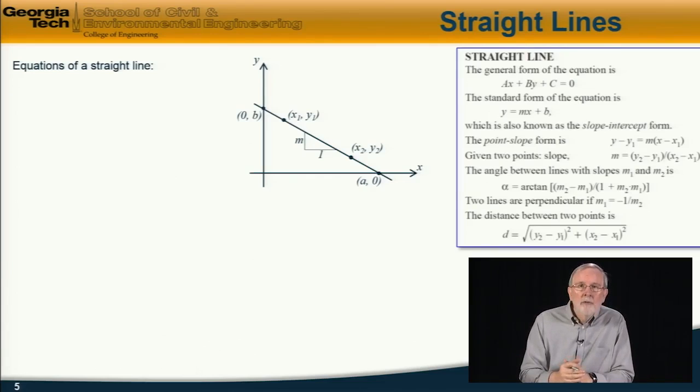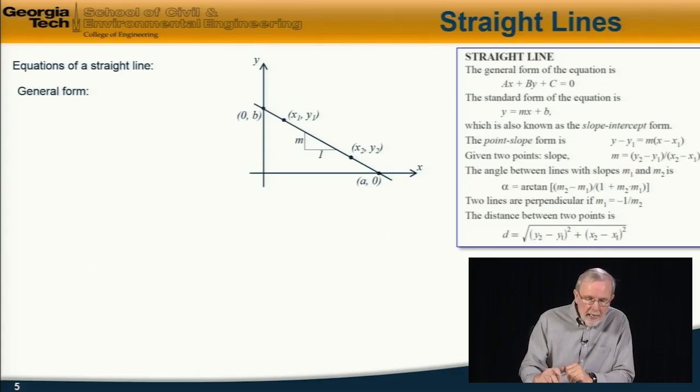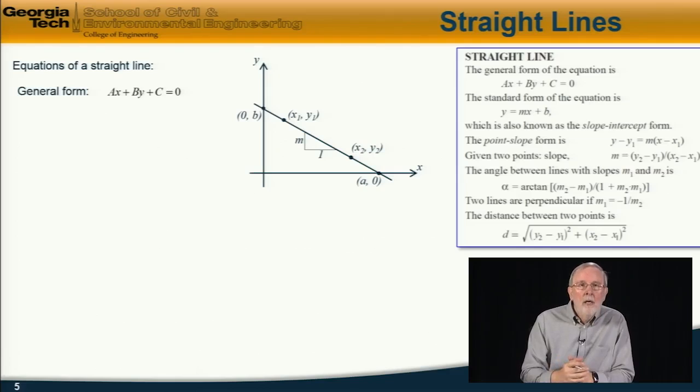They give general forms of this equation, standard forms, and relationships to form a line passing through two points. And reproducing them here, first of all the general form of the equation of a straight line is ax + by + c = 0, where a, b, and c are constant coefficients.